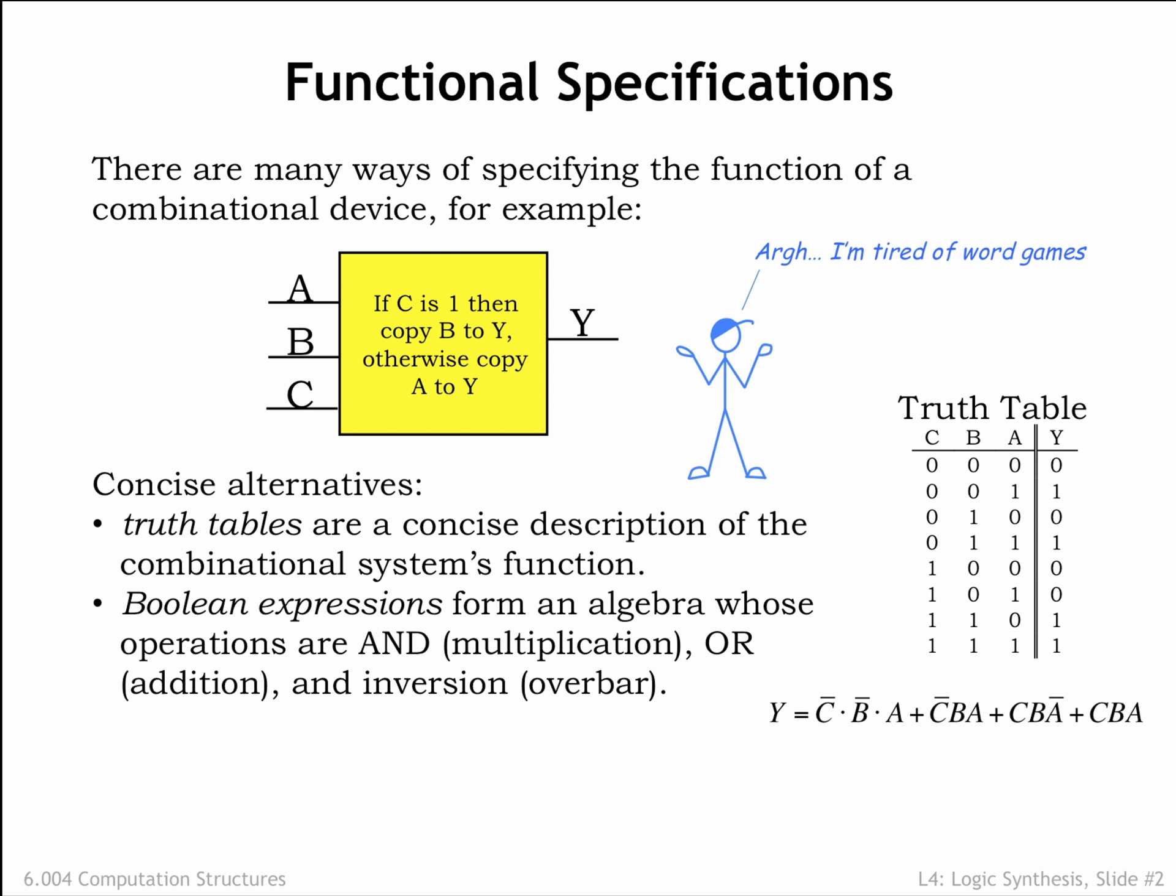The Boolean operation AND is represented by the multiplication operation using standard mathematical notation. Sometimes we'll use an explicit multiplication operator, usually written as a dot between two Boolean expressions, as shown in the first term of the example equation. Sometimes the AND operator is implicit as shown in the remaining three terms of the example equation.